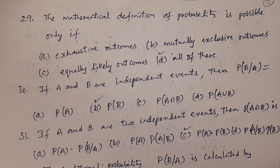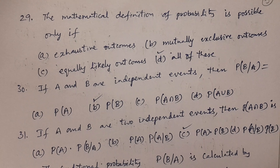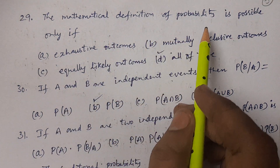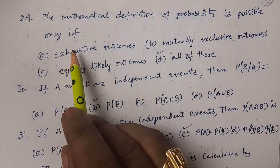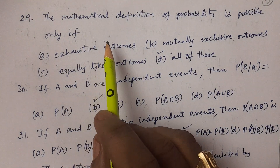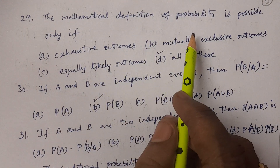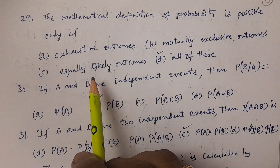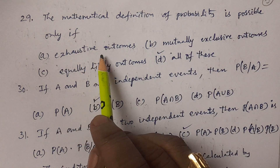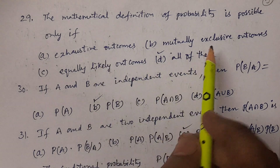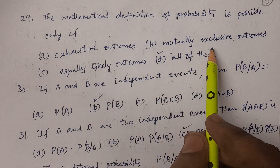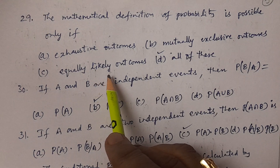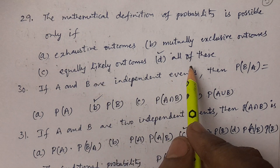Question number 29: The mathematical definition of probability is possible only if — options: A. Exhaustive Outcomes, B. Mutually Exclusive Outcomes, C. Equally Likely Outcomes, D. All of these.